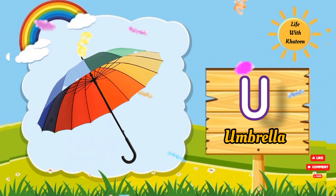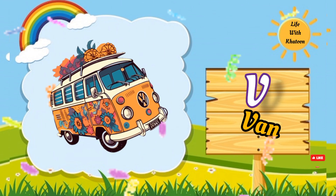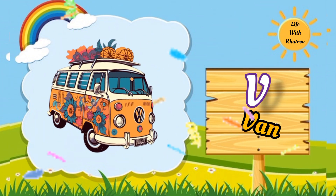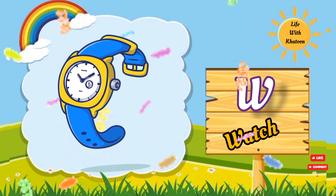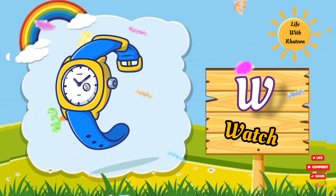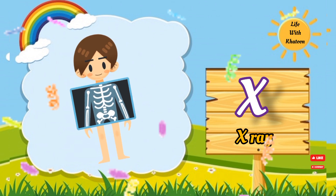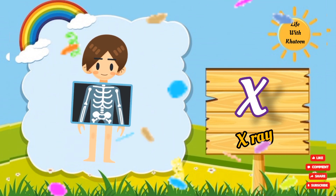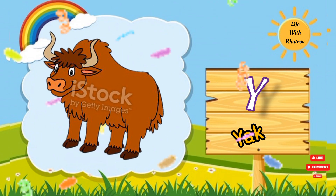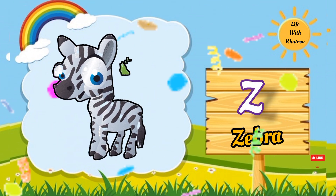U for umbrella, V for van, W for watch, X for X-ray, Y for young, Z for zebra.